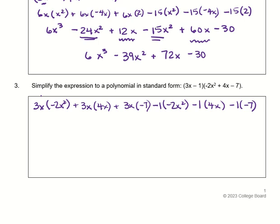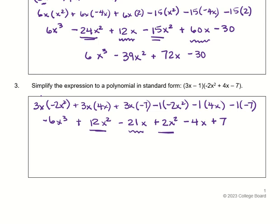Going back through the multiplication: 3x times negative 2x² is negative 6x³. 3x times 4x is 12x². 3x times negative 7 is minus 21x. Negative 1 times negative 2x² is positive 2x². Negative 1 times 4x is negative 4x. Negative 1 times negative 7 is positive 7. Combining like terms — 12x² and 2x², and minus 21x and minus 4x — gives negative 6x³ plus 14x² minus 25x plus 7.